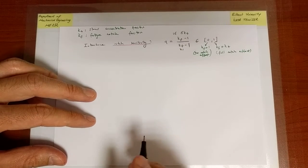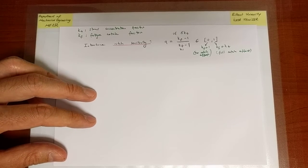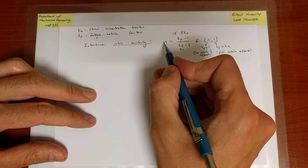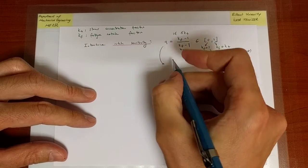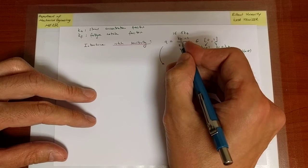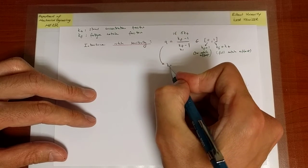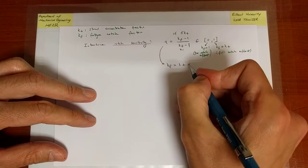So the smaller the value of Q, the less the effect of the notch. Now we can, if we have a value for Q, what we can do is we can simply solve for the value of KF from this equation. In other words, KF will be equal to 1 plus Q times KT minus 1.